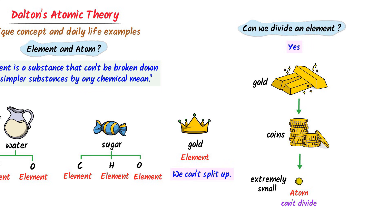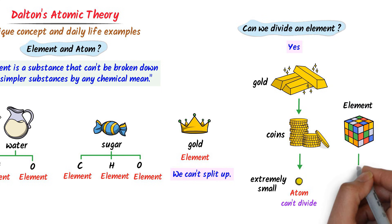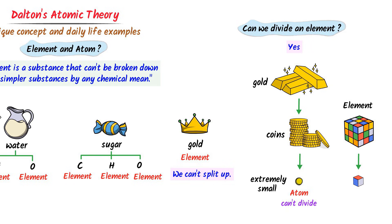Now to make it super easy, consider this lego toy. It is like an element. When I divide this lego toy into smaller bricks, they are like atoms because we cannot divide these bricks further. If you have learned this fundamental concept of element and atom, you have already learned the concept of Dalton's atomic theory. Hence, note down this basic concept of element and atom.